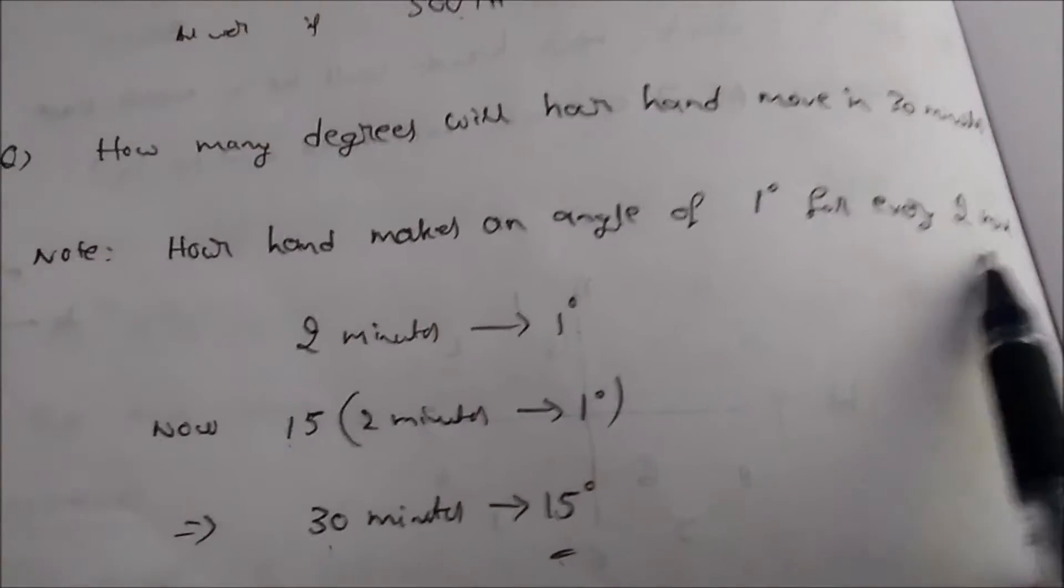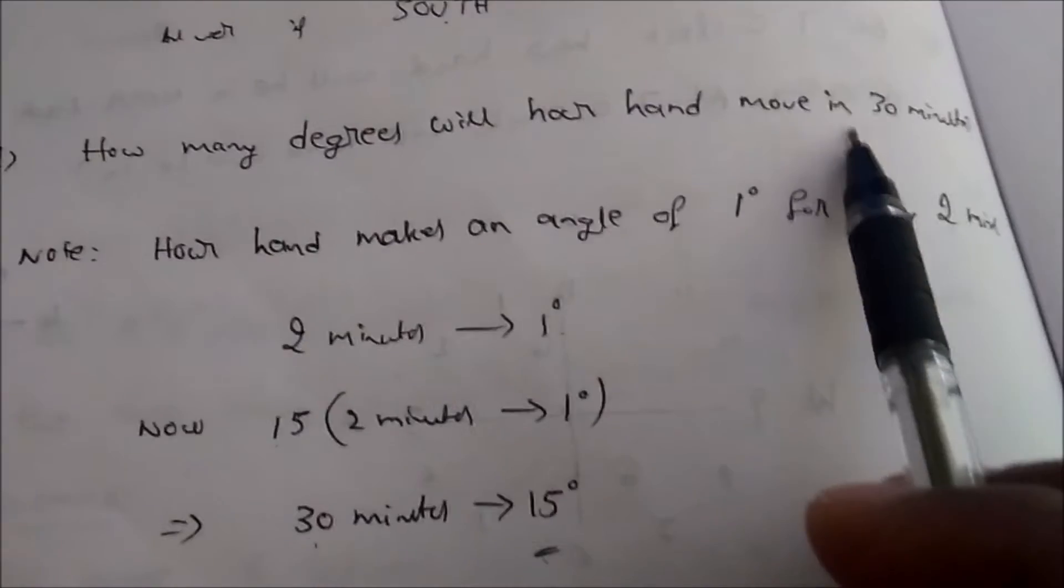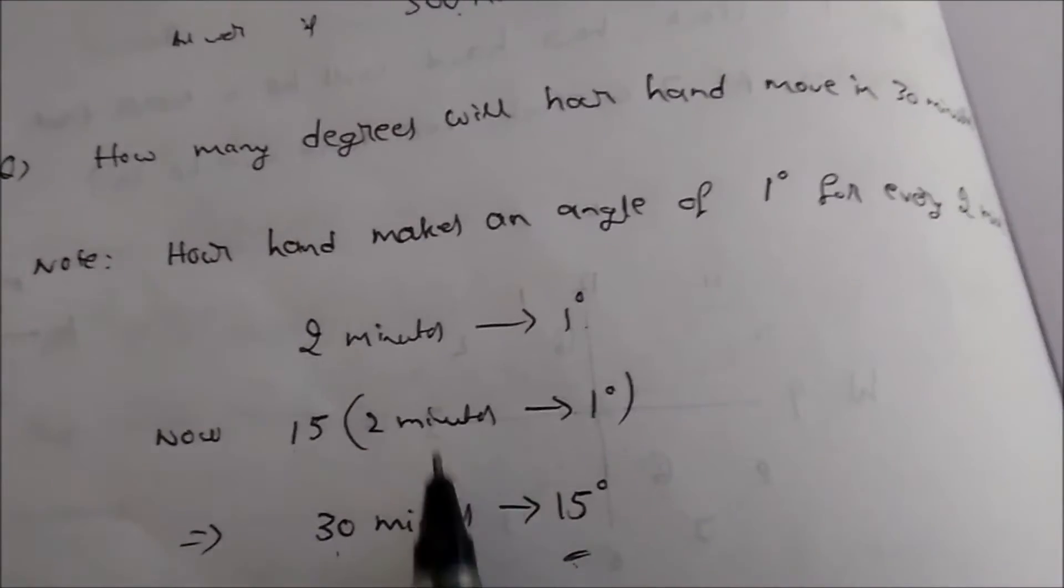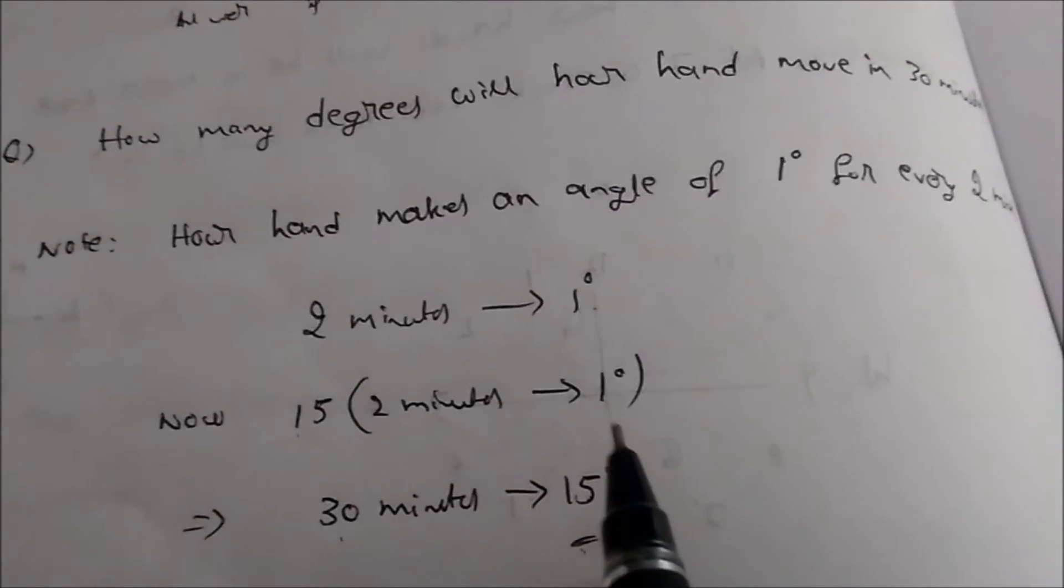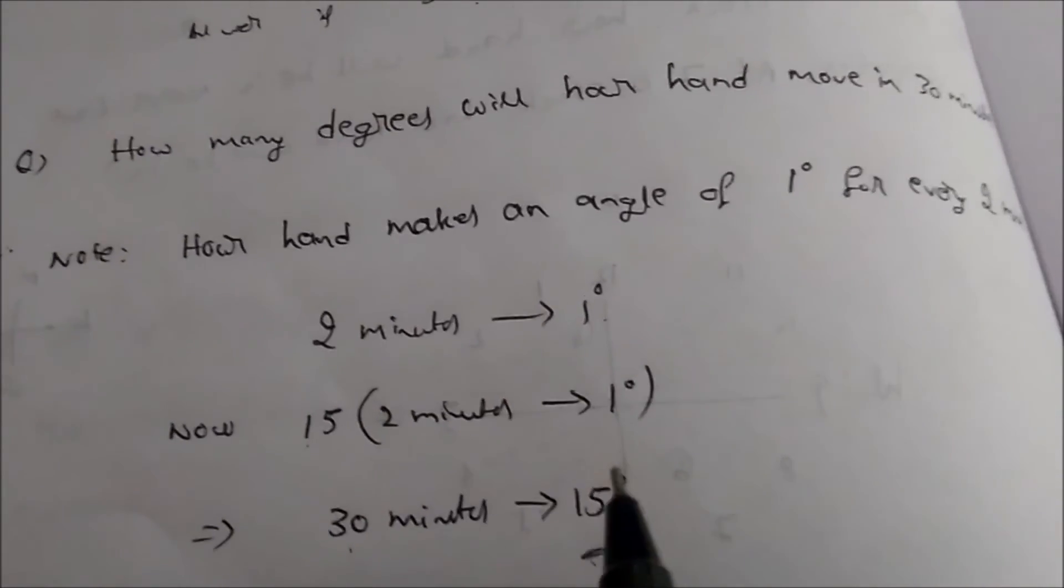So just remember this formula statement: hour hand makes an angle of 1 degree for every 2 minutes. Depending on the requirement, you just multiply the required value and you'll get the exact output. Thank you for watching this video, please subscribe to my channel My App Skills.